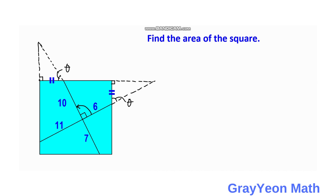We can also say that these two right triangles are congruent because of the Angle-Side-Angle congruence theorem, because we have two angles that are congruent, and the side in between these two angles is congruent. So these two right triangles are congruent. If we label one leg as x, then the corresponding leg is also x, and if we label the other leg as y, then that corresponding leg is also y.